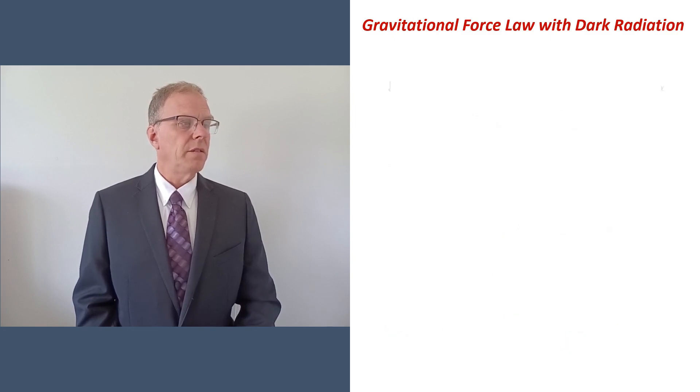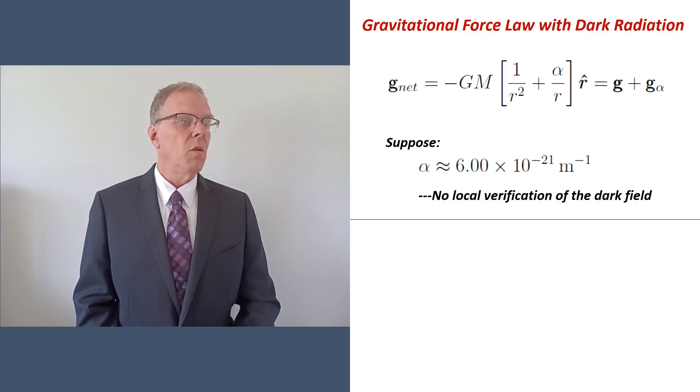For small values of alpha, say 10 to the minus 20 inverse meters, you're going to have a hard time verifying the 1 over r term by local measurements, but in the far field limit velocities of orbiting test bodies will go flat.